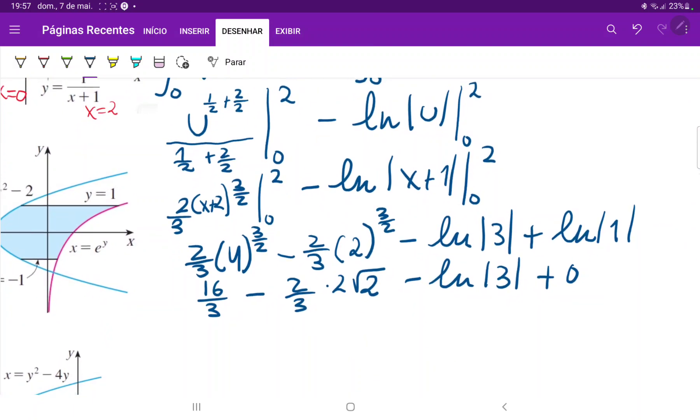So when we clean this up a little bit, we can say that this is 16 over 3 minus 4 square root of 2 over 3 minus ln of 3, and this is the analytic part of the answer, and if you did want to get an approximation, let me just put this in my calculator, this would give you, let's see, 16 over 3 minus ln of 3, this would give you approximately 2.349.